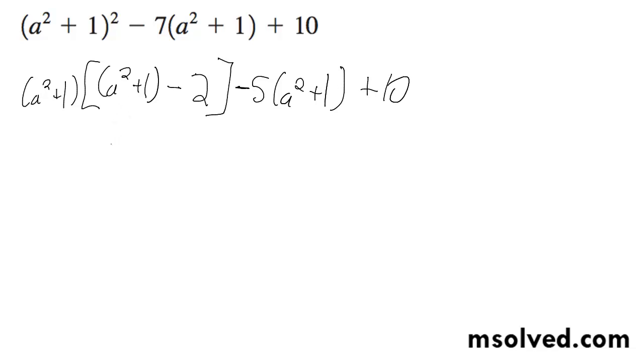So continuing on, I get a squared plus 1 minus 5 because I'm grouping this with this. And then I get a squared plus 1 minus 2.